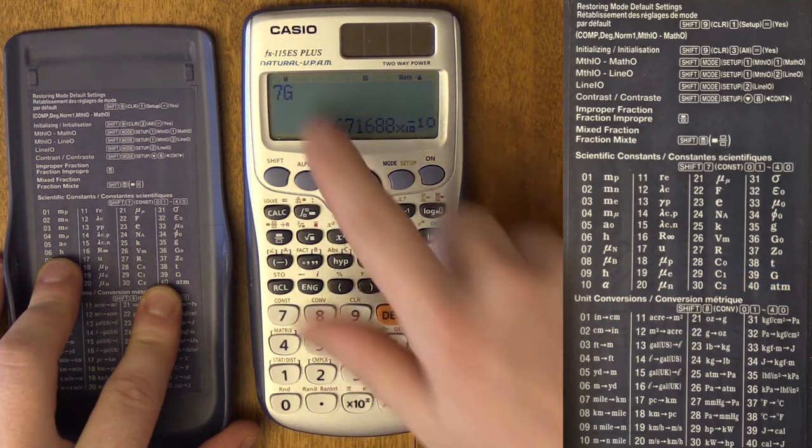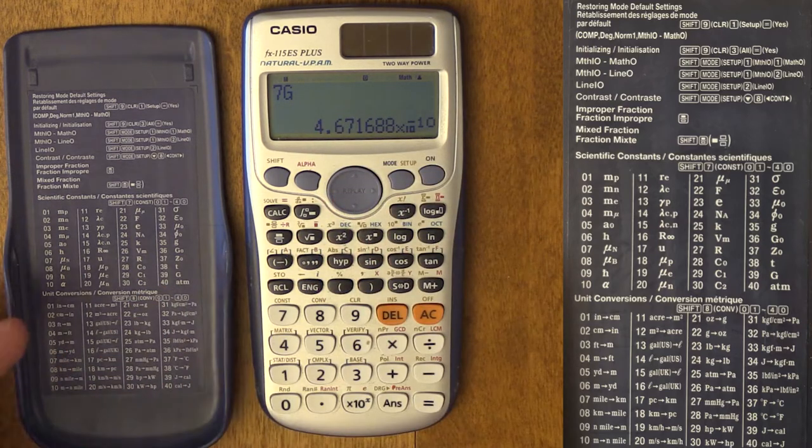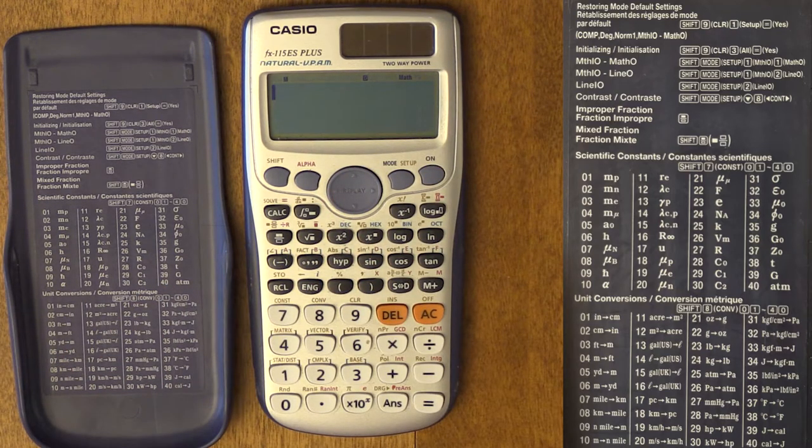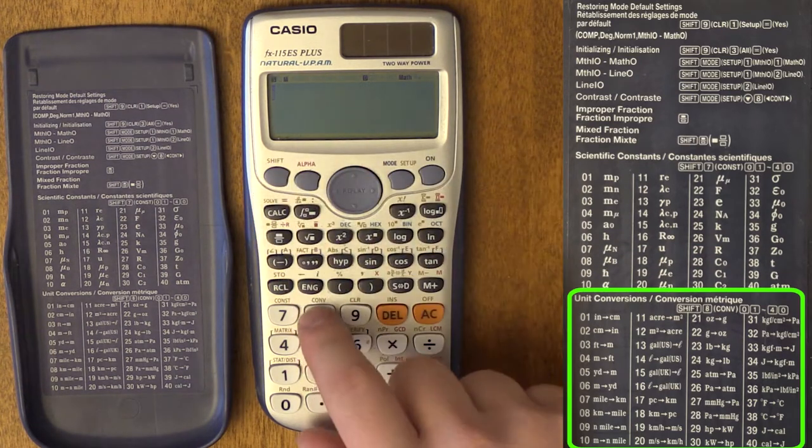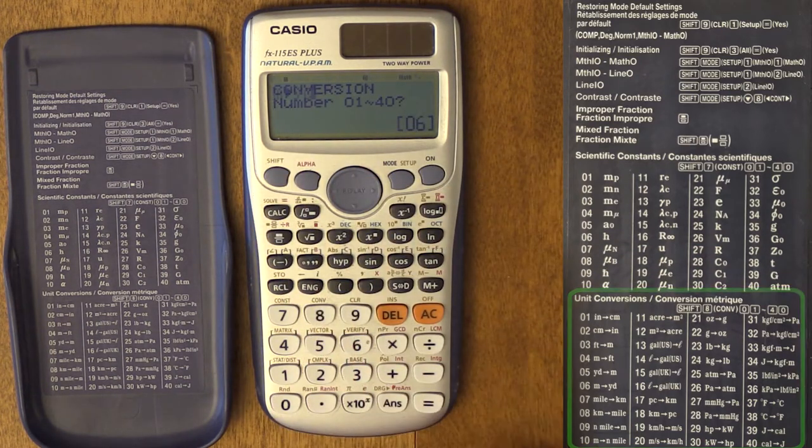If I want to do 7 times G, you just do 7G. There's a ton of different constants you can use. The next thing you can do is unit conversions. To do unit conversion, you type in Shift 8 for conversion, and then you type in the conversion you want to do.